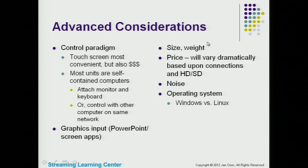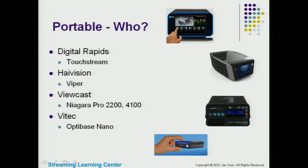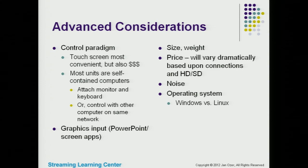Size and weight will differ dramatically. Pricing will also vary dramatically based upon connections — Digital Rapids can get quite pricey for HD-SDI in and HD output. A big difference in this category is noise: the OptiBase unit is perfectly quiet with no fan and can work anywhere, while all the other units are too loud to have close to your speaker. And then operating system — you've heard my mini rant on Windows versus Linux.